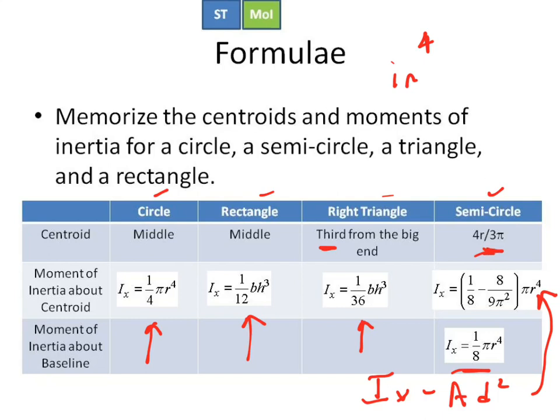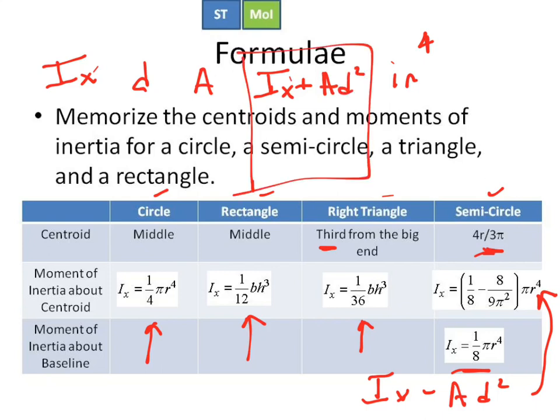So that's sort of your overview about moments of inertia. Remember your chart is essentially just what is the part about the centroid, what is d, what is A, and then you have Ix plus Ad squared. Add this column, and then you're done.